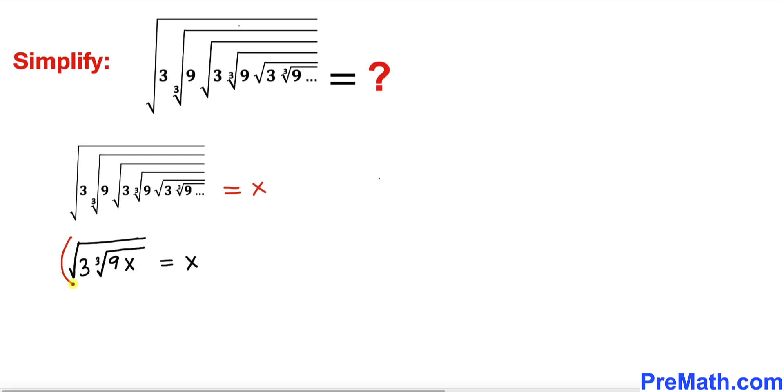Now let's go ahead and take a square on both sides. I'm going to take a square on this side as well, and now we can see this square and square root they undo each other. So we simply got on the left hand side 3 times the cube root of 9x equals x squared.